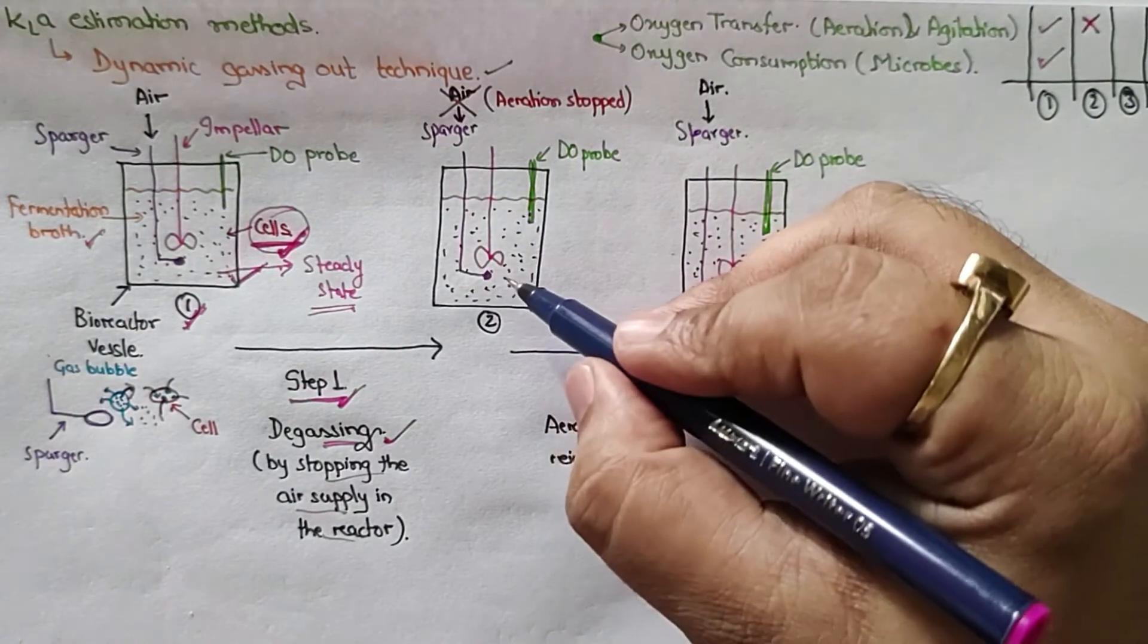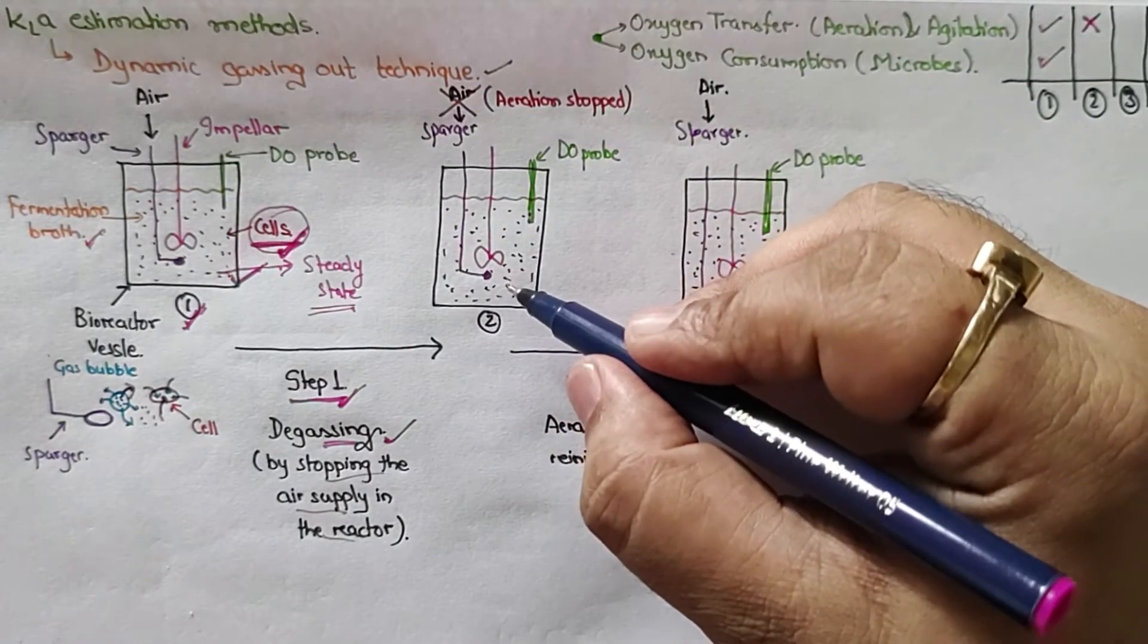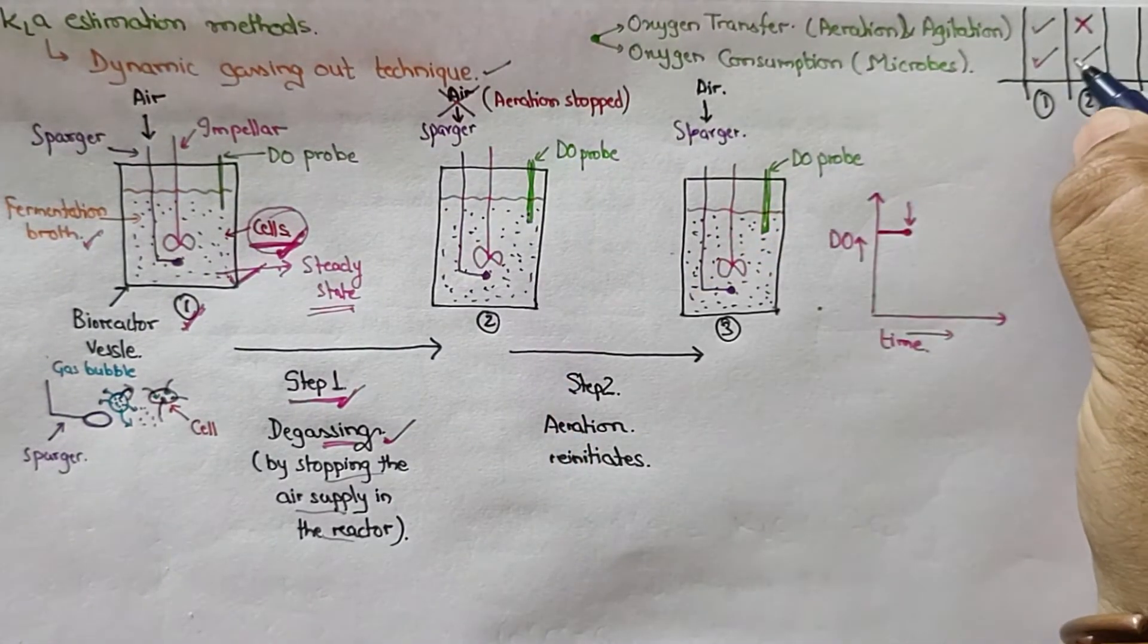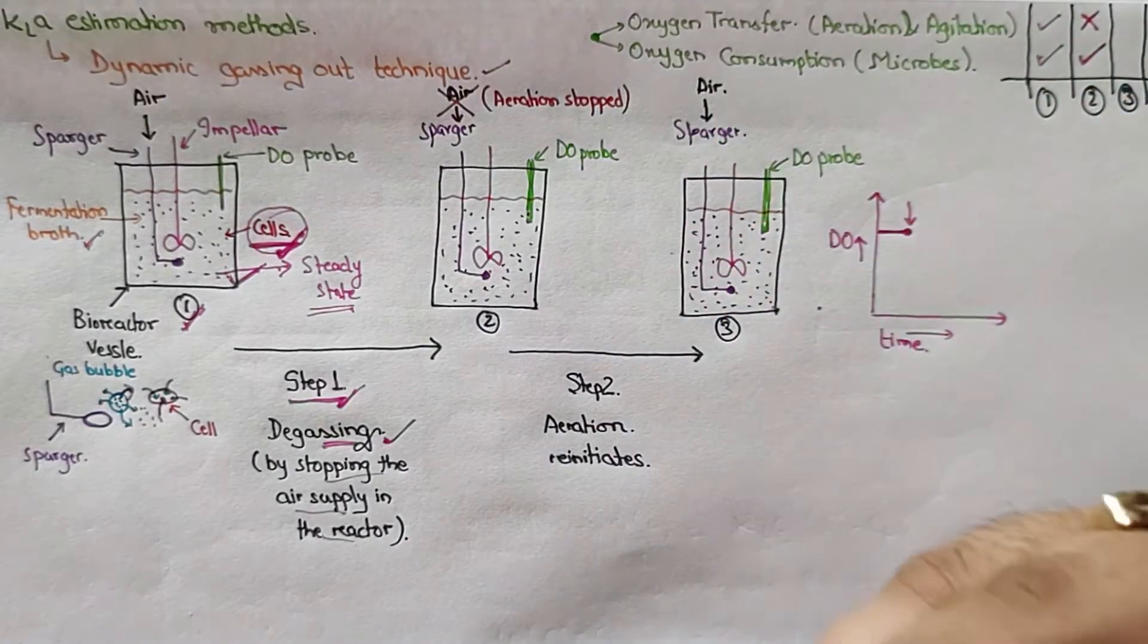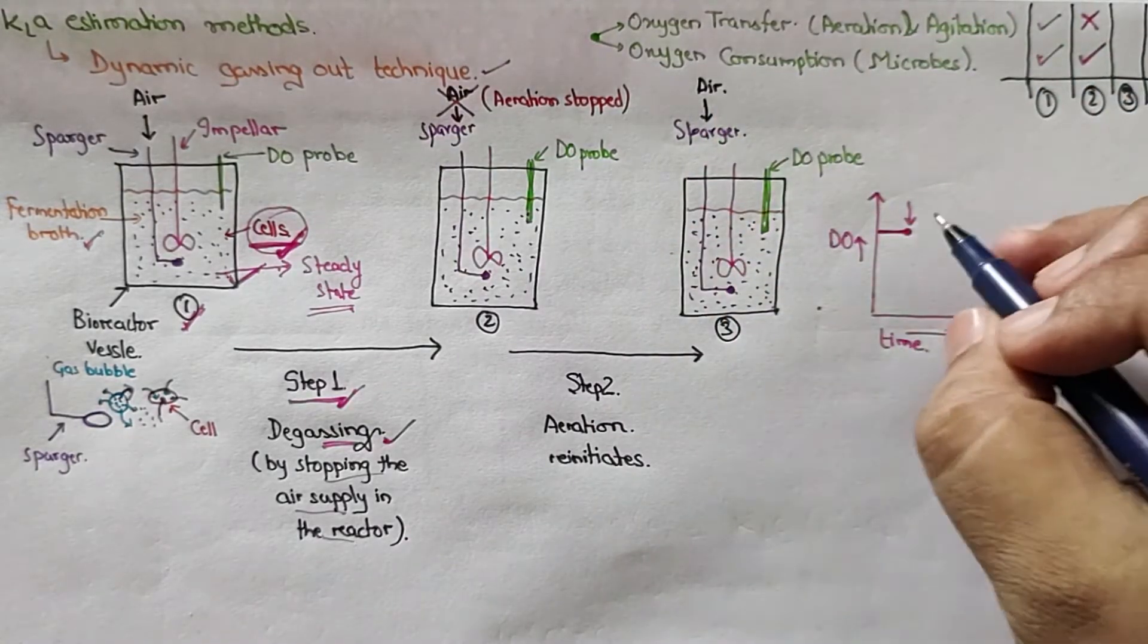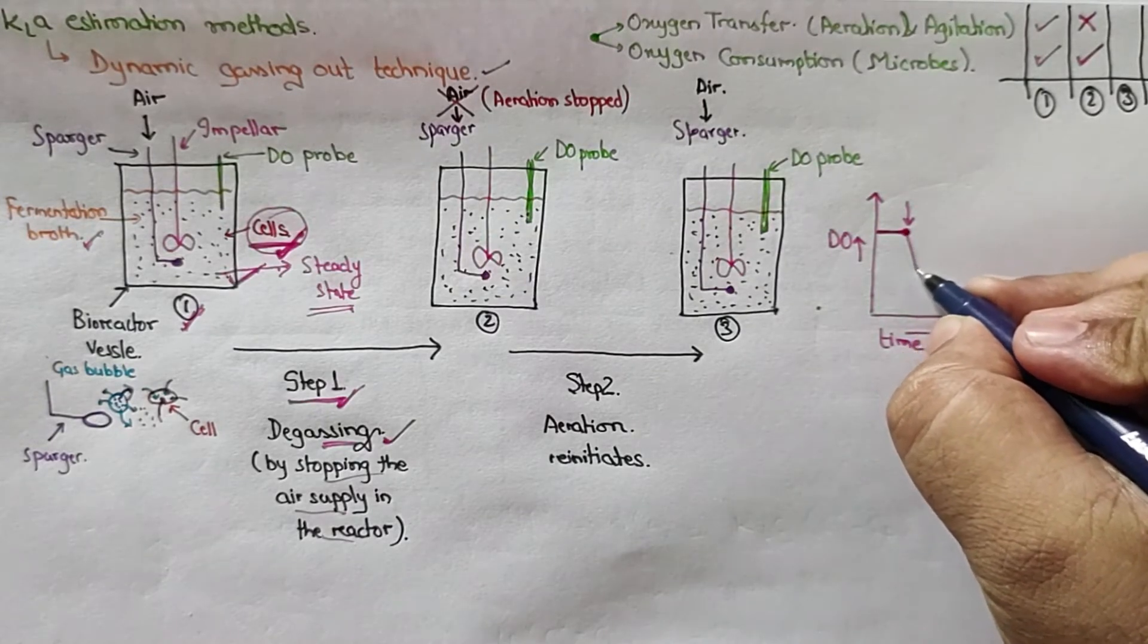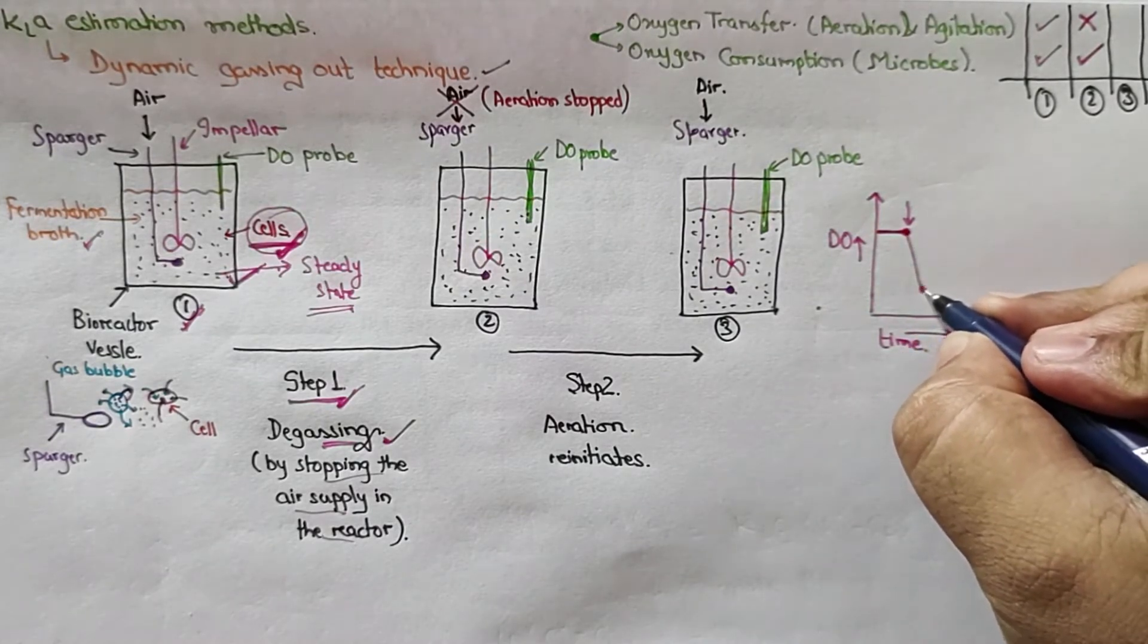But the cells will be utilizing the oxygen. So oxygen utilization is occurring. We are not supplying but the oxygen is being utilized. So what will happen? The dissolved oxygen concentration starts to decrease.